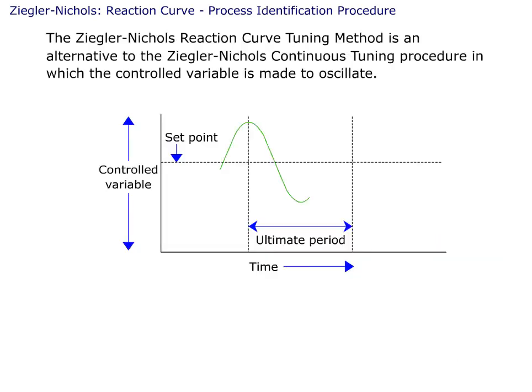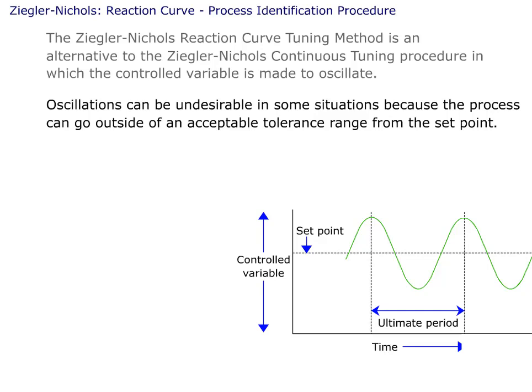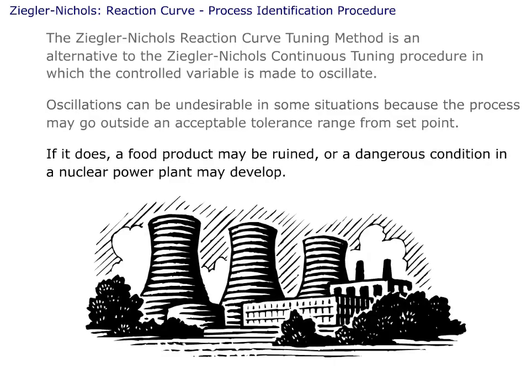The Ziegler-Nichols reaction curve tuning method is an alternative to the Ziegler-Nichols continuous tuning procedure, in which the controlled variable is made to oscillate. Oscillations can be undesirable in some situations, because the process can go outside of an acceptable tolerance range from the set point. If it does, a food product may be ruined, or a dangerous condition in a nuclear power plant may develop.